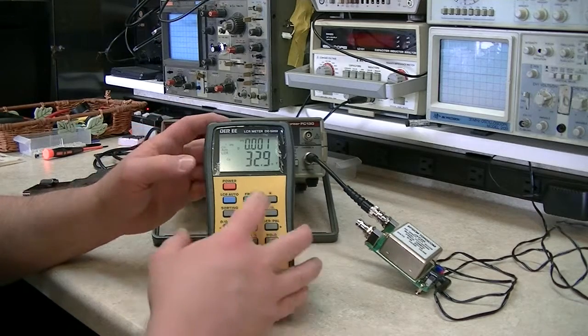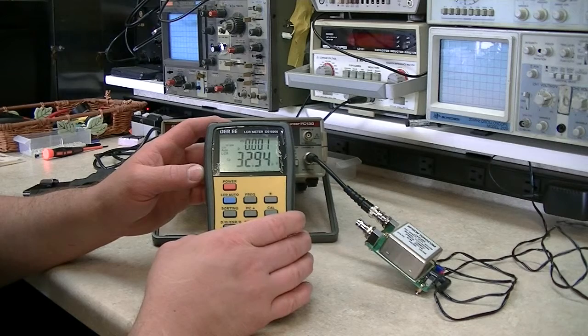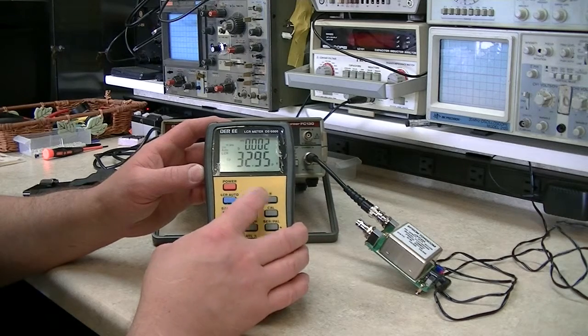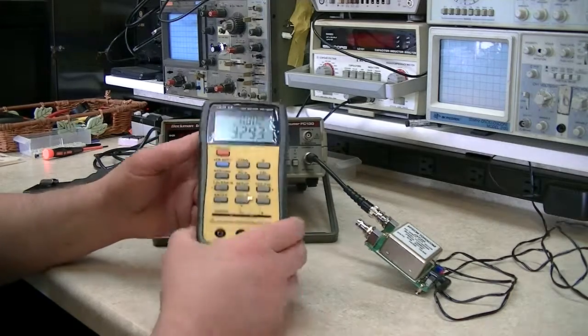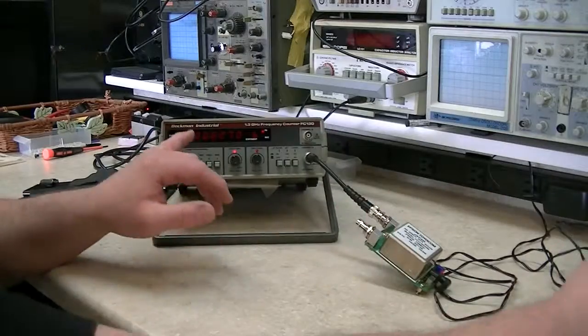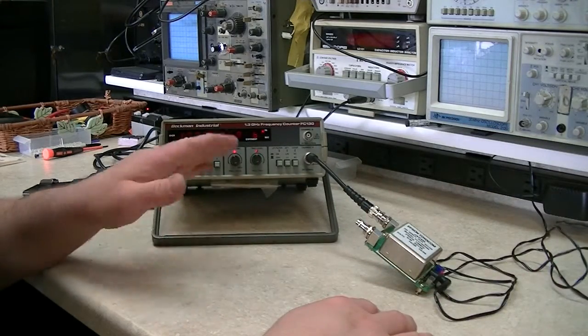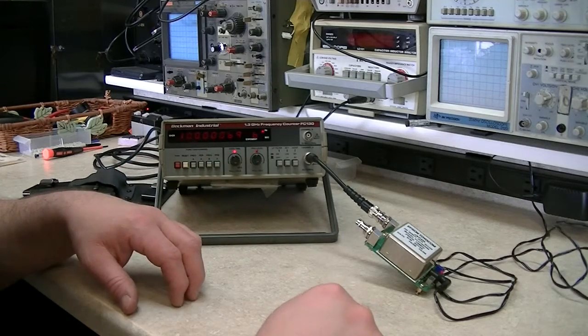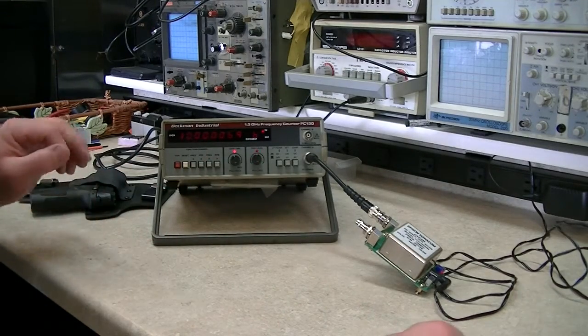As you can see it's 32.9 right on the dot. At one kilohertz, 10 kilohertz it's right there, 100 kilohertz it's still right there. So I think this may be the capacitor to use on this, and hopefully within maybe 10 or 15 minutes I can use this frequency counter instead of within an hour.